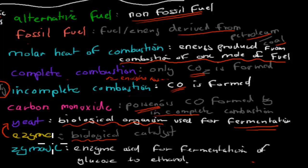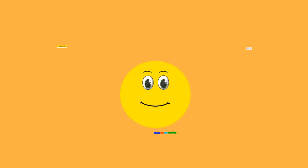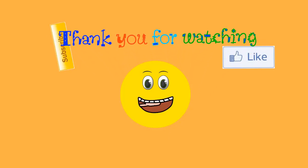And if it comes to fermentation, it produces this enzyme called zymase. Zymase is an enzyme used for the fermentation of glucose to ethanol. So this zymase enzyme speeds up this reaction from glucose to ethanol. So I hope that was useful. Thank you for watching.